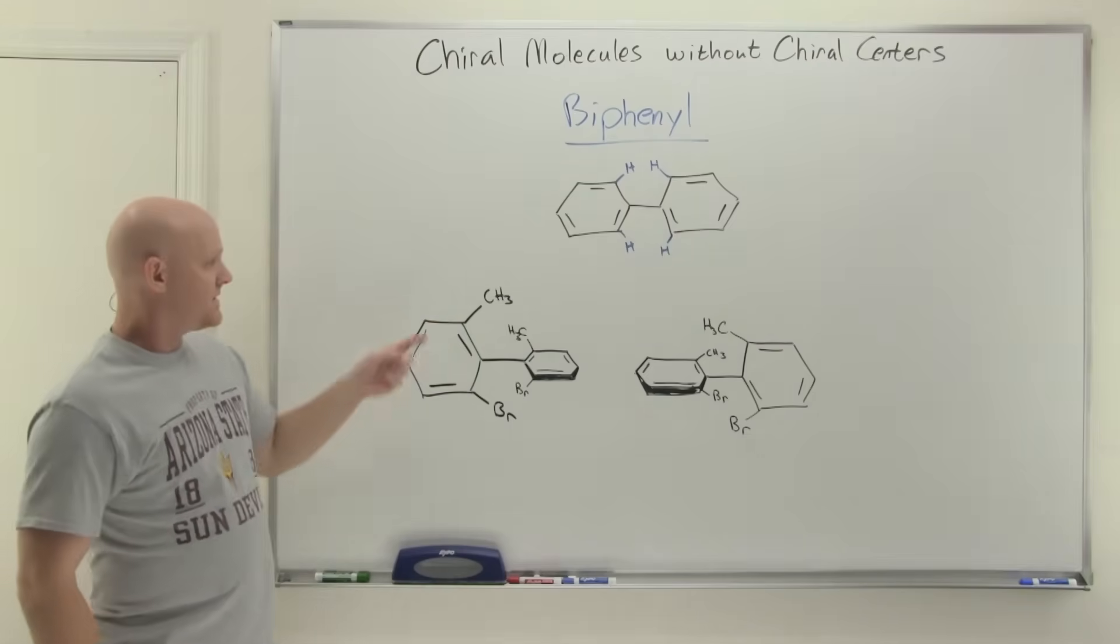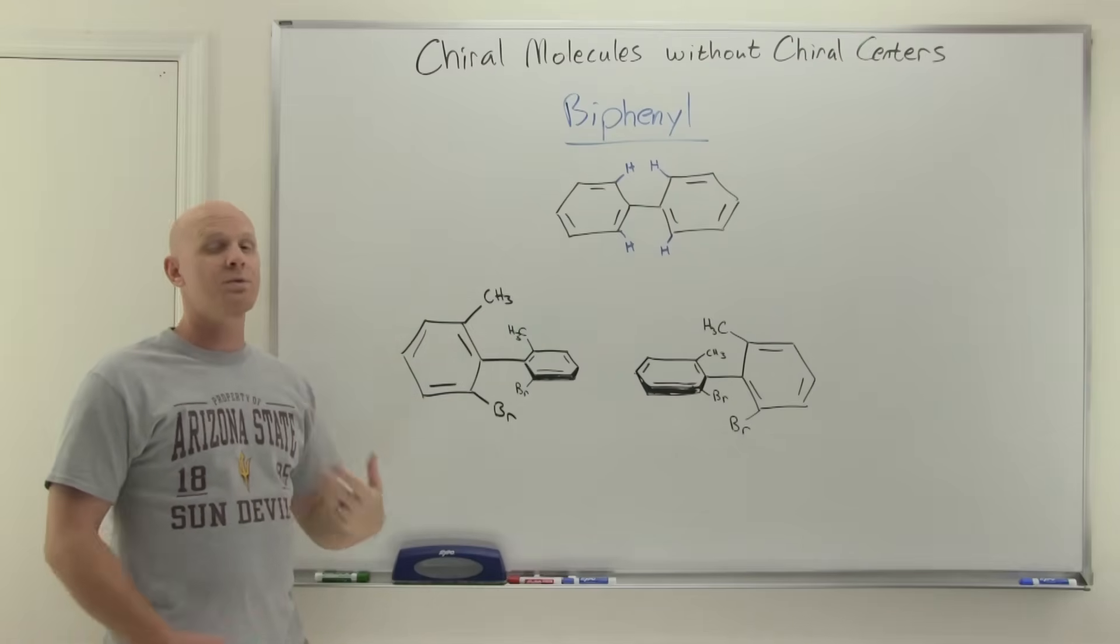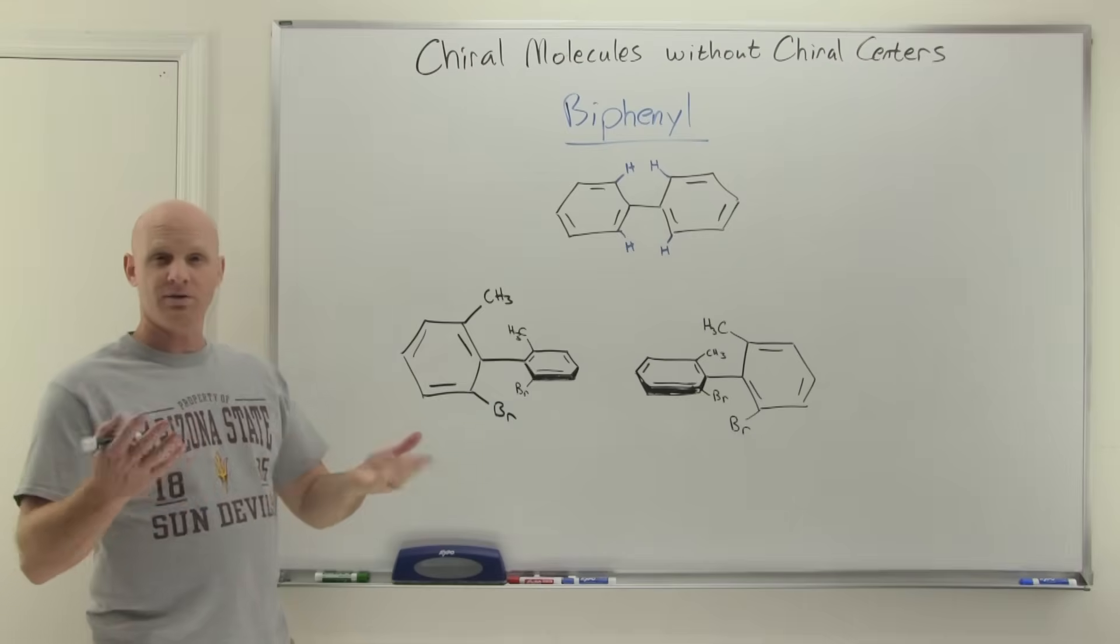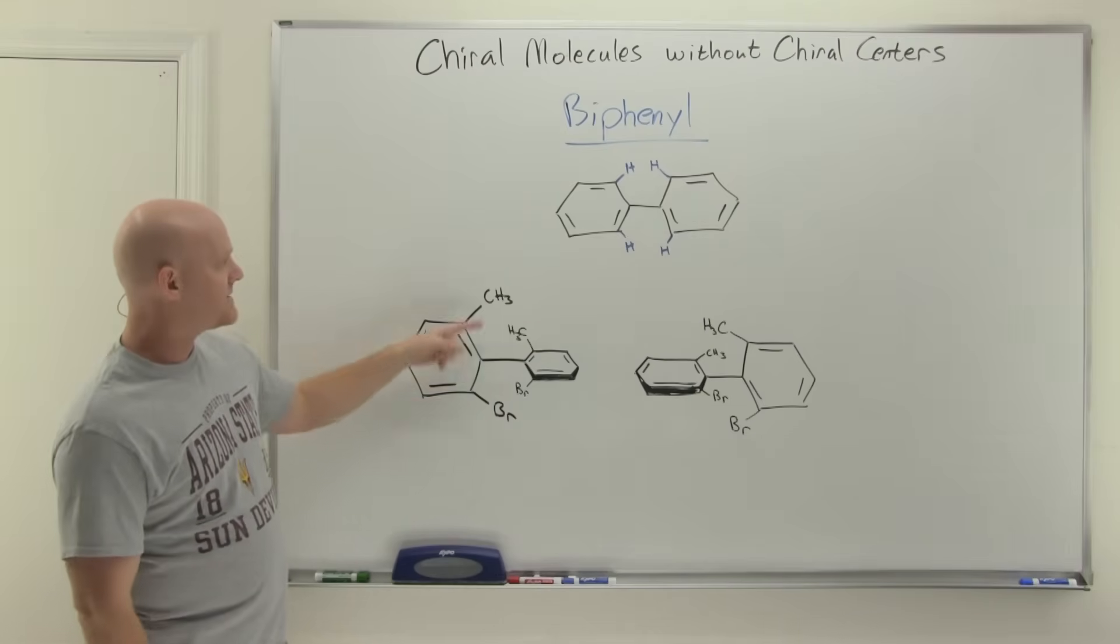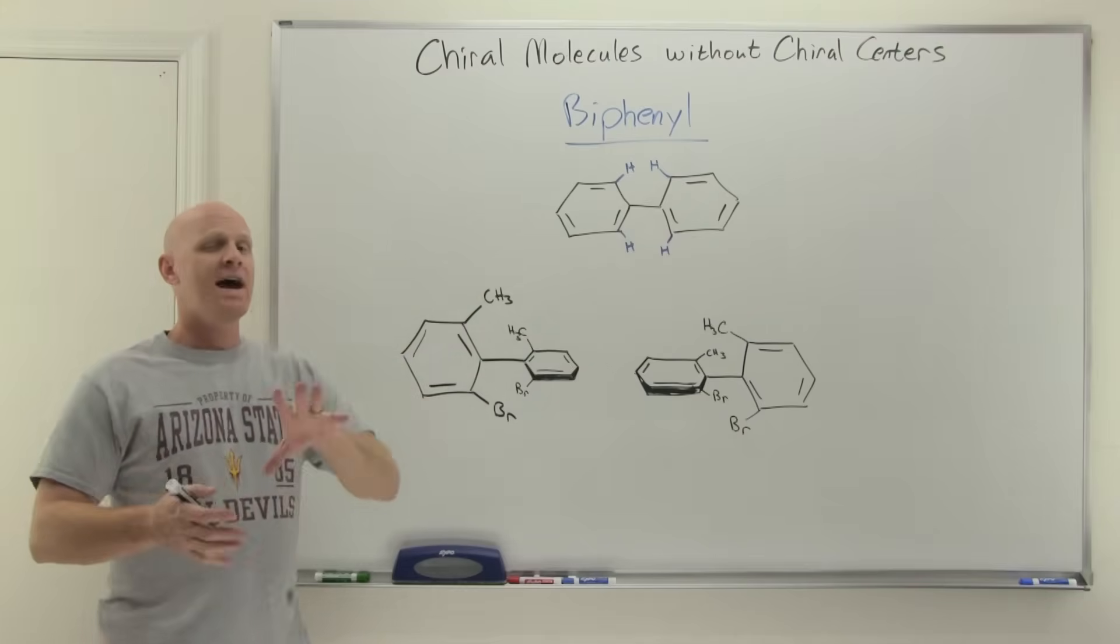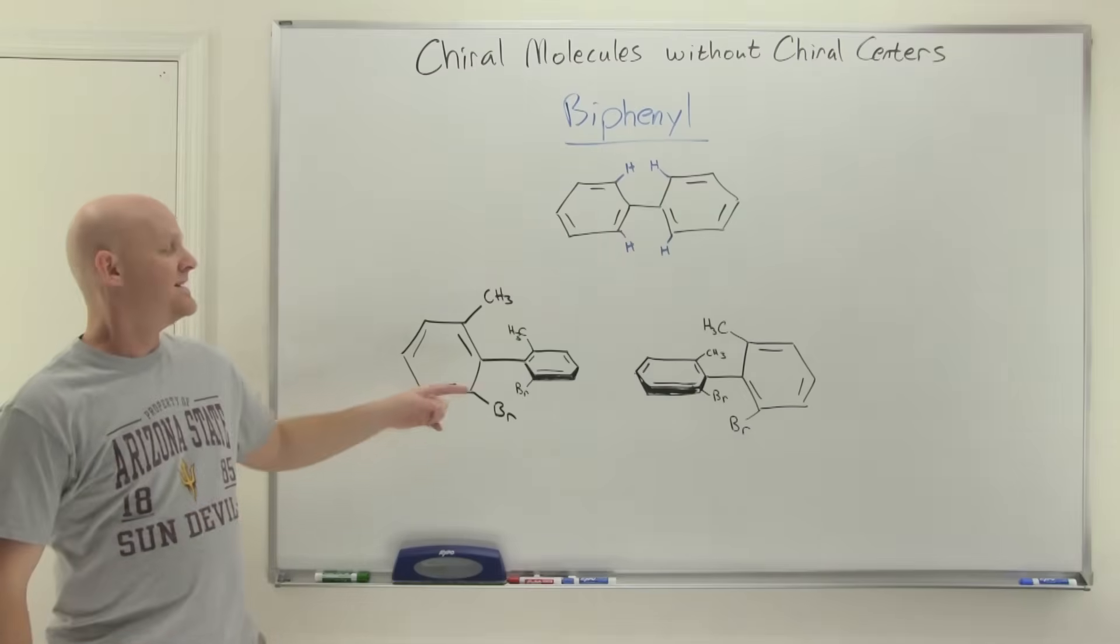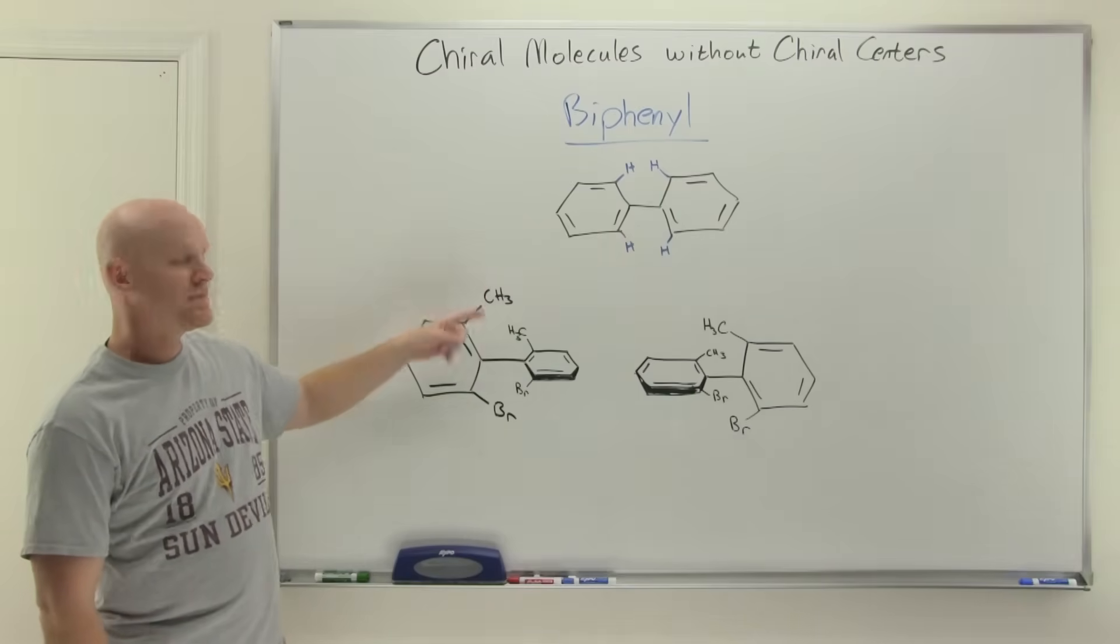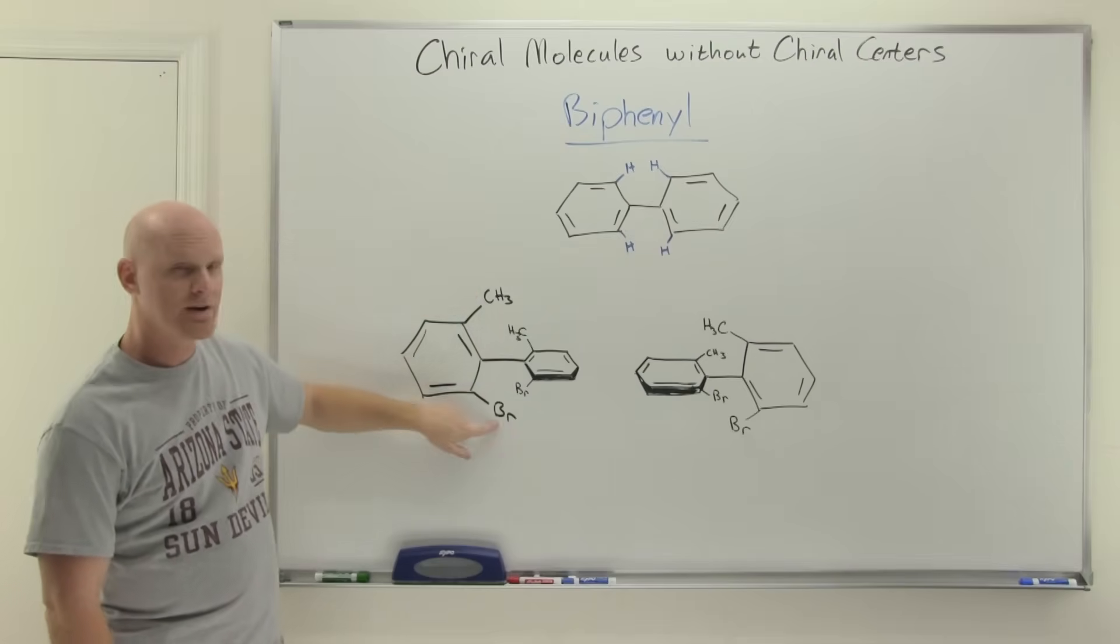And again, two requirements. You got to have four things in these ortho positions, at least three out of the four that are bigger than hydrogen. So not actually all four, but three out of four bigger than hydrogen. And the two things on each ring have to be different from each other. So similar to what we saw at one end of allene, the two things had to be different that were attached to that sp2 carbon. Same thing here, the two things on a benzene ring have to be different from each other.